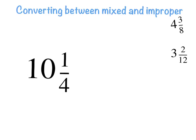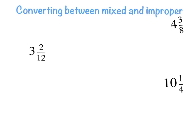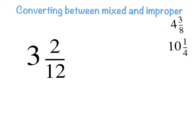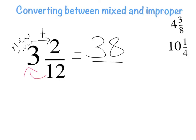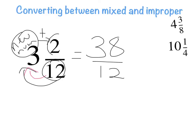One more example: twelve multiplied by three is thirty-six, then add two — thirty-six plus two is thirty-eight — keeping the same denominator of twelve. So it becomes thirty-eight over twelve. It's as simple as that. Just remember: multiply the denominator by the whole number, then add the numerator. It's a three-step process: step one, two, three. Good luck!